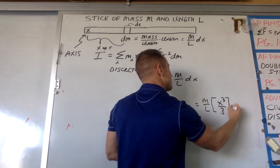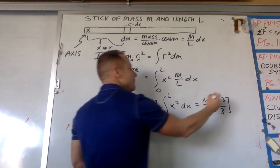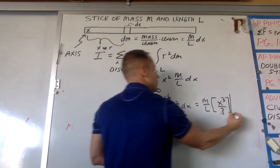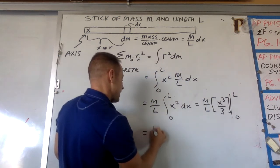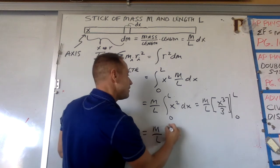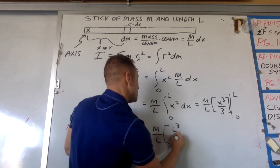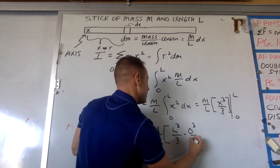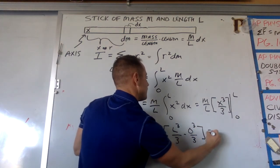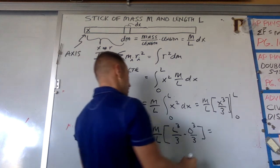Definite integral. We don't really have to mess with the constant or it would go away anyway. We have to evaluate it at zero and L. So finally, I guess last line of algebra, you get M over L times L cubed over three minus zero cubed over three. So finally you get one third ML squared.